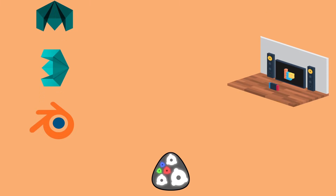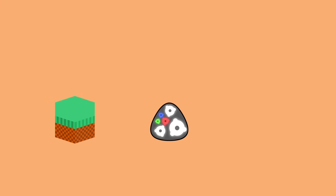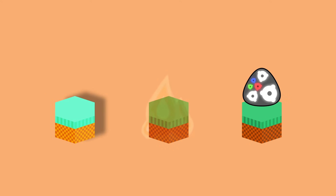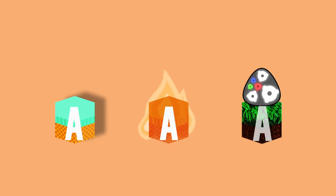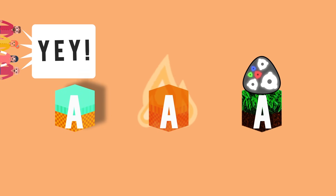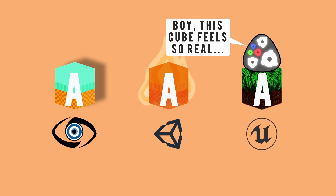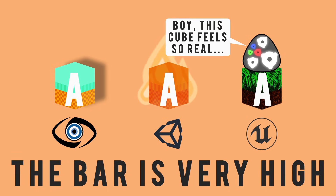Supporting art asset file formats isn't all modern engines do. Rendering capabilities have become a competitive area in development tech, with in-engine lighting and effects functionality now making AAA quality visuals accessible to small development teams. CryEngine, Unity, and Unreal are among the competitors trying to capture the market of developers targeting AAA visuals, and the bar is very high.